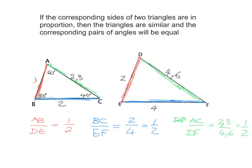So between the red and blue sides, the angle is 80 in this triangle, so it will also be 80 in the other triangle. Between the red and green, it's 60 in this triangle, so it'll be 60 in the other. And between the green and blue, it's 40 in this triangle, so it'll be 40 in the other.